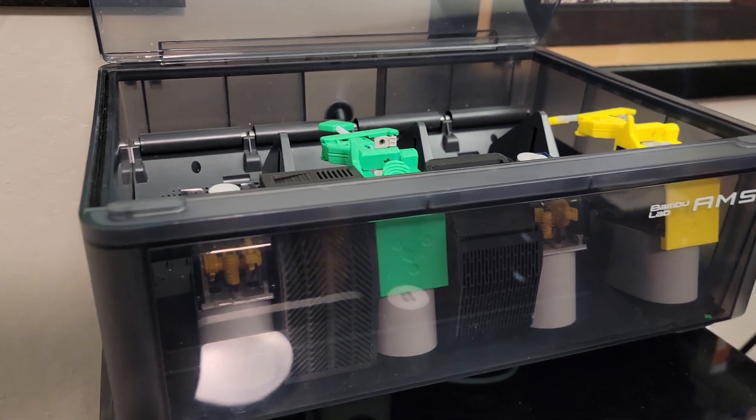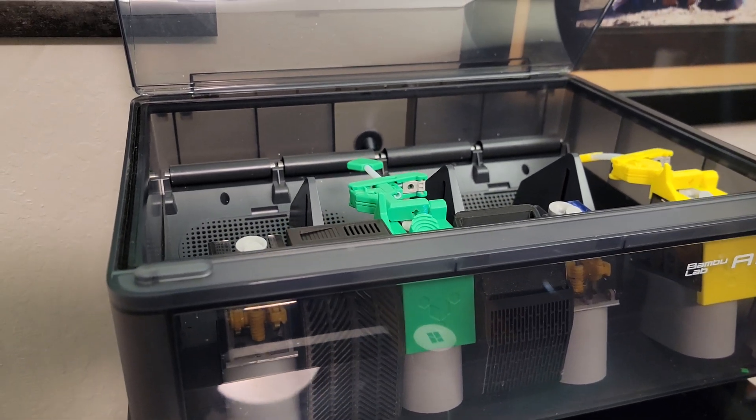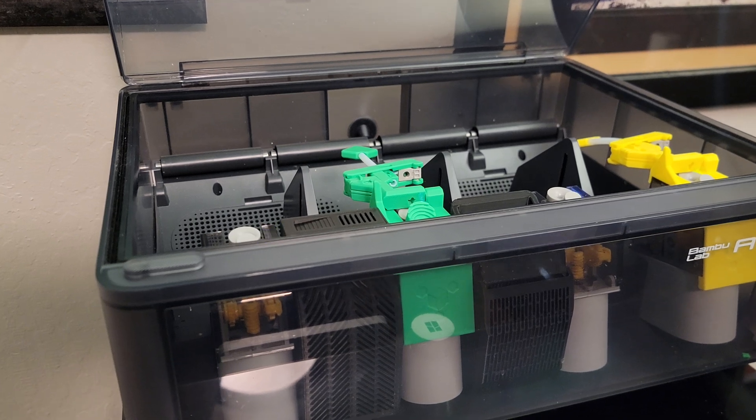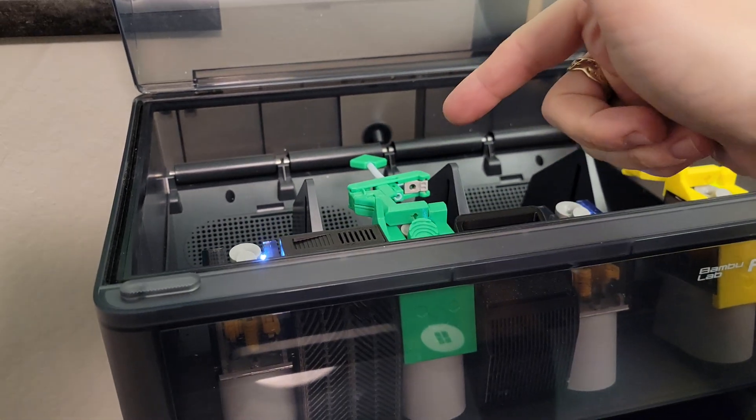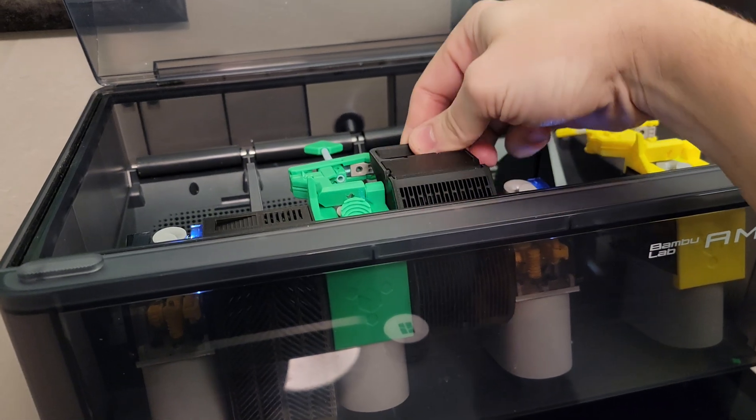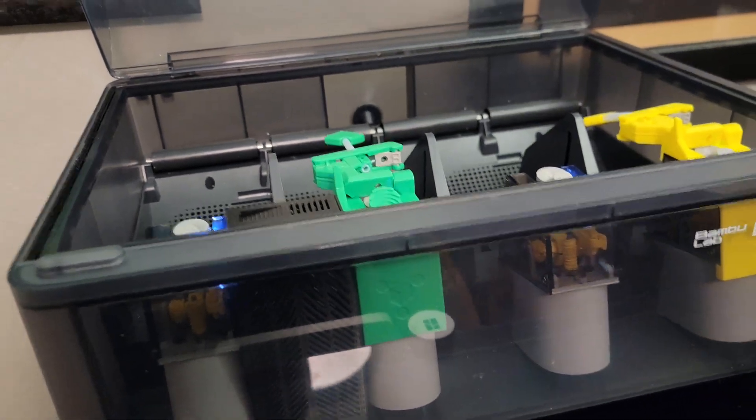This is a real quick video on how to remove and disassemble the AMS Saver Snag Cutter. First remove your filament, then any desiccant holders.